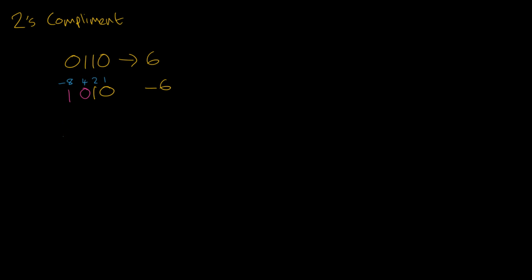What we do is minus 8 plus nothing because there's nothing in 4, plus 2 because there's a 1 under the 2 column, plus nothing because there's nothing here. Well, minus 8 plus 2 is equal to minus 6.